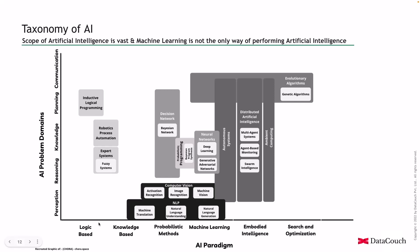Starting with the logic-based AI paradigm — it is related to knowledge representation and problem solving. Then there is knowledge-based, which involves large databases of information and rules used to interpret things and take actions. Then there are probabilistic methods — ways to apply probability theory to solve AI problems and find the chances of something happening.